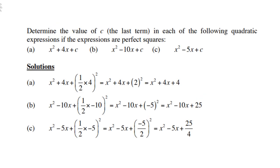So, determine the value of c, that is the last term or the so-called constant term, in each of the following quadratic expressions if the expressions are perfect squares. If there are perfect squares, we look at x squared plus 4x plus c, then that c is normally, now take note, a half times 4. 4 is that coefficient of the middle term. So, it's a half times 4, and you square all of that, and therefore you get 2 squared, which is 4.